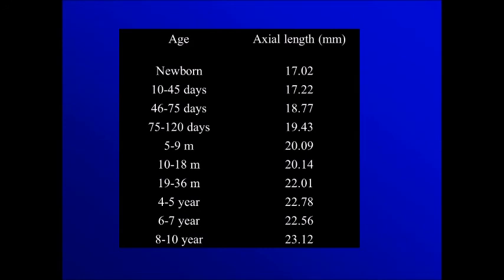The second differential diagnosis is Coats disease, which is usually unilateral and usually does not have calcification unless there is chronic degeneration on top. This shows the average axial length of the eye at different ages, and this brings us to the end of this presentation.